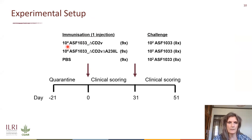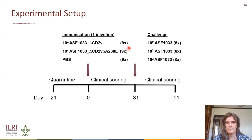The experimental setup uses one injection with three groups: 10⁴ TCID50 of the CD2V knockout virus, 10⁴ TCID50 of the double knockout, and a PBS control group, with nine animals in each group. We then challenge eight animals per group with 10² of the wild-type. We sometimes lose an animal due to non-ASF-related issues like an abscess, so we start with nine to end with eight per group. There are three weeks of quarantine; animals are tested ASF-free and we do clinical scoring and sampling after both immunization and challenge.